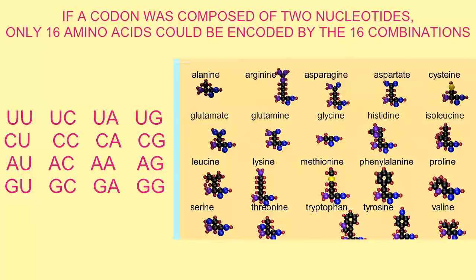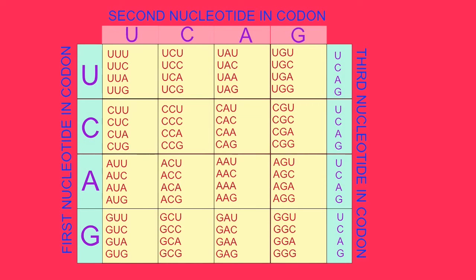If a codon consisted of two nucleotides, then given the four different kinds of nucleotides, this would allow for a maximum of 16 different codons, which would allow for a maximum of 16 different amino acids. Once again, since there are about 20 amino acids used in most living things, this would not be sufficient.